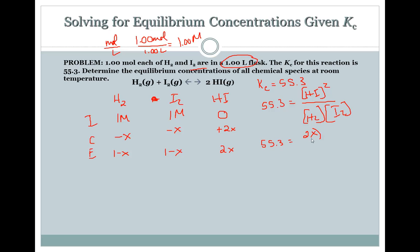Let's use this ICE box again. We have NOCl, we have NO, and we have Cl2. I, C, E. Initially, we have two moles here and zero and zero. Because of this coefficient, we're going to be losing 2X here. Because of this coefficient, we're going to be gaining 2X here. This coefficient, we're going to be gaining 1X.